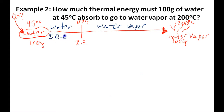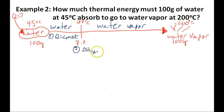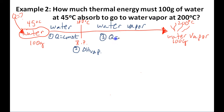We'll find the amount of thermal energy the water needs to absorb as it goes from 45 to 100 degrees — that's step one. In step two, we'll find the heat of vaporization, which is the amount of energy it takes to convert the water to water vapor. In the third and final step, we'll calculate the thermal energy the water vapor needs to absorb to go from 100 to 200 using Q equals CM delta T. Once we have these three answers, all we need to do is add them up.